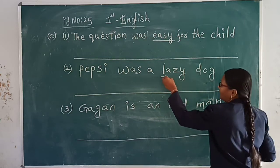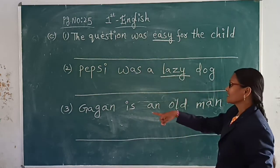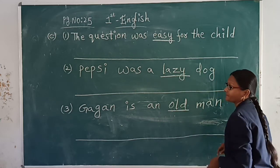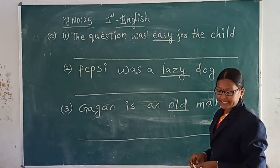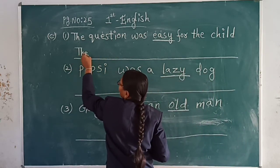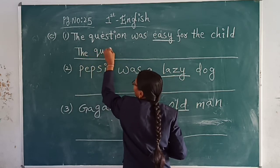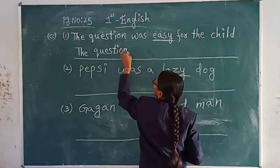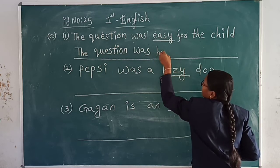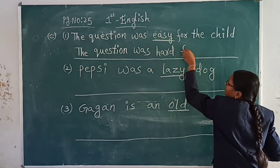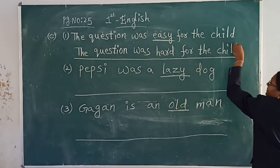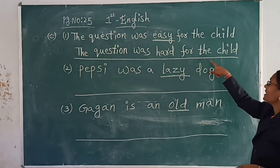Pepsi was a lazy dog — describing word is lazy. Gagan is an old man — describing word is old. Easy opposite is hard. So the question was hard for the child.